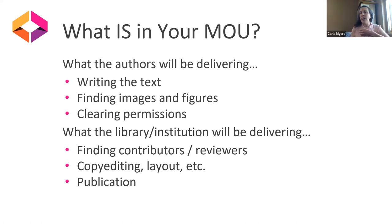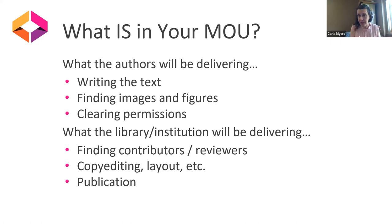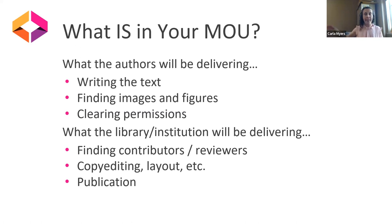Very clearly outlining from the author: here is what we expect to get from you as deliverables. In terms of the institution, we outline the publishing support we are going to provide. Maybe in terms of finding contributors — we have a student employee skilled at graphic design, and we employ them to help support people publishing OERs by creating artwork. We may also go out and find reviewers for the work, provide copywriting services, layout services — whether in-house or contracting with third parties like Scribe. And then the actual publication: what are our plans in terms of where this will live and when we hope to have the project published?